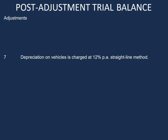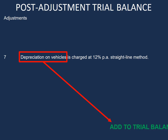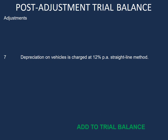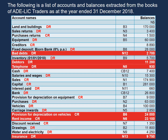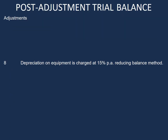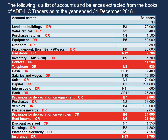Depreciation on vehicles is charged at 12% per annum straight line method. Our depreciation is not on our list of accounts, so we need to add that to our trial balance. But our provision for depreciation is on our list of accounts, so let's go ahead and highlight that. Depreciation on equipment is charged at 15% per annum reducing balance method. We have our depreciation, which is not on our list of accounts, but we have our provision for depreciation account, which is on our list of accounts, so let's highlight that. We are now finished highlighting the accounts that we have to prepare adjustments for.